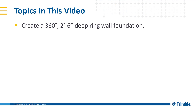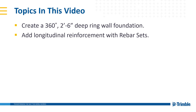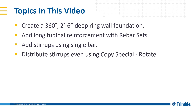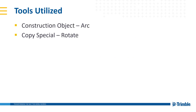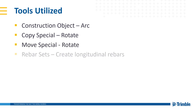Topics in this video include: create a 360-degree 2'6" deep ring wall foundation, add longitudinal reinforcement with rebar sets, add stirrups using single bar, and distribute stirrups evenly using copy special rotate. Tools utilized include construction object arc, copy special rotate, move special rotate, rebar sets create longitudinal rebar, rebar single bar, and rebar.